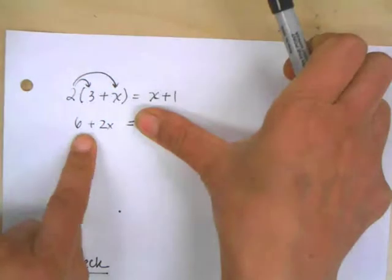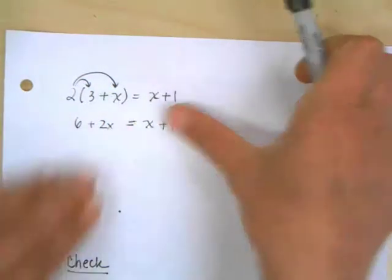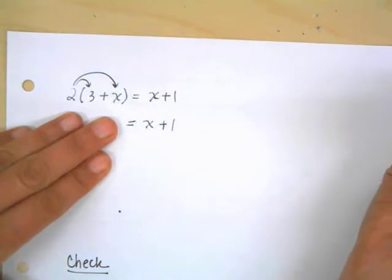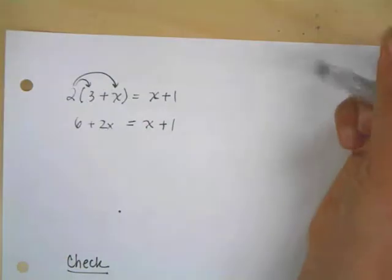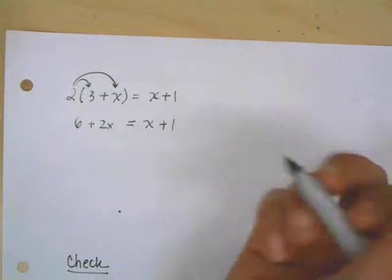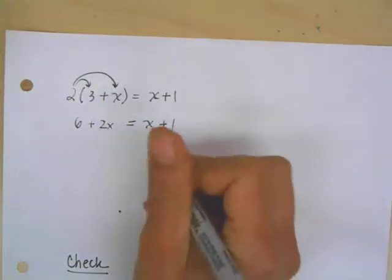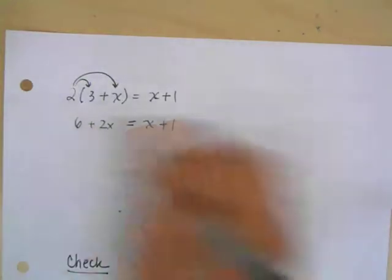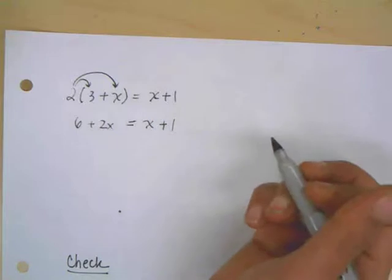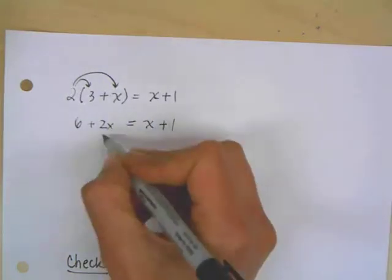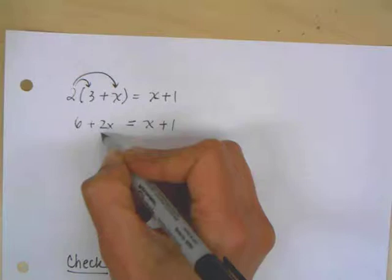Then I'm going to continue. Is there anything on the left-hand side that I can simplify? No, I can't add x's and constants together. And we've already checked that there's nothing that can be simplified on the right side. So now we're going to say, how do I get all the x's to one side and all of the non-x's or the constants to the other side?